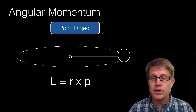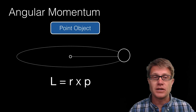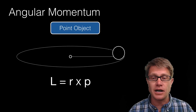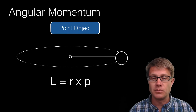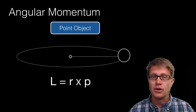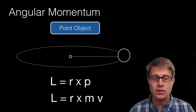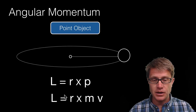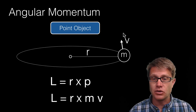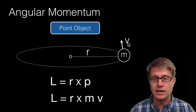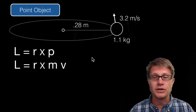In AP Physics you should be able to calculate the angular momentum of a point object — an object moving or rotating around a given point, such as an object attached to a string or the moon orbiting the earth. The formula is simply r, the radial distance, times the linear momentum, which is mass times velocity. With velocity, mass, and radius, you simply multiply those together.